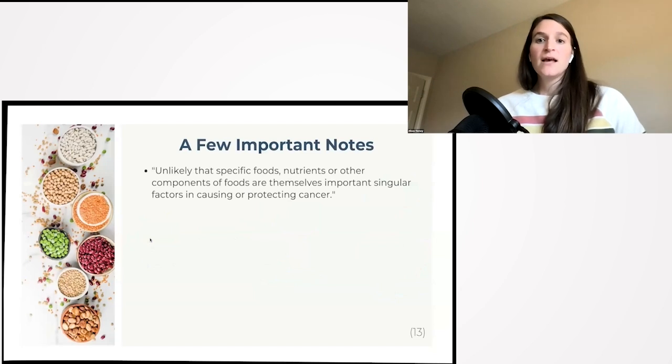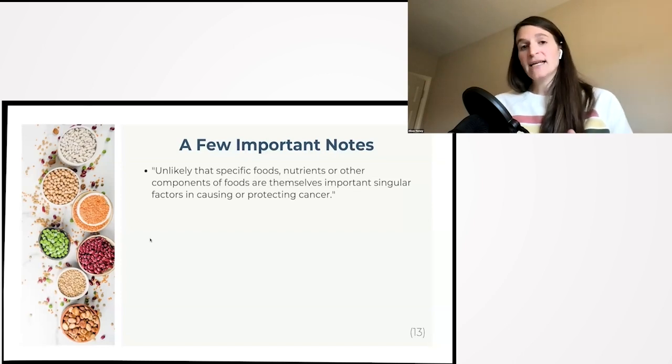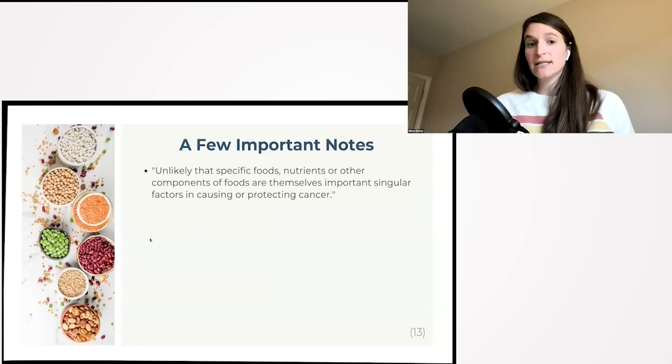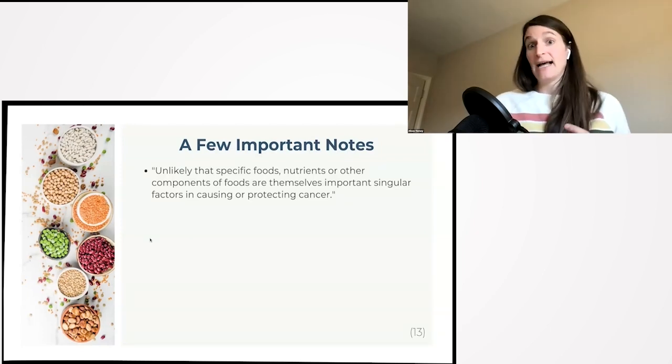A few important notes from the Third Expert Report: It's unlikely that specific foods, nutrients, or other components of foods themselves are important singular factors in causing or protecting cancer. Why I think this is really important is because it's not necessarily just one nutrient or one food that's going to protect us completely from cancer. We have identified some nutrients that play a bigger role in helping reduce cancer risk, but in the long run it can't just be 'I eat this one food every day and therefore I'm never going to get cancer.' It has to do with what the diet and lifestyle looks like as a whole picture.